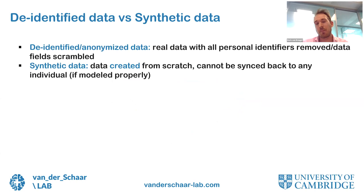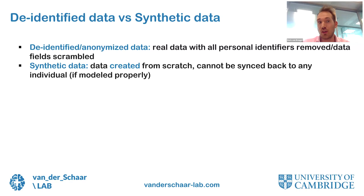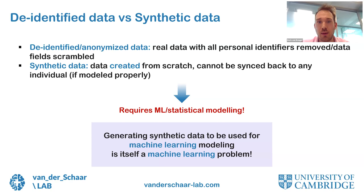De-identified data — where personal identifiers are removed or fields scrambled — has disadvantages. Synthetic data is entirely created from scratch using deep generative models, similar to image models like DALL-E but for healthcare data. However, even though we can generate synthetic data with generative models, synthetic data is not private by default. Privacy metrics like differential privacy are theoretically difficult and don't intuitively tell you how vulnerable data is to attacks in practice.